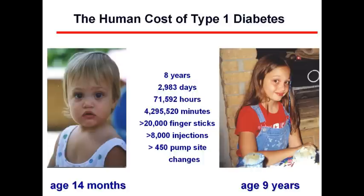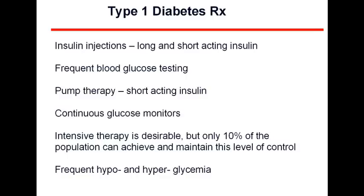The current state of the art for type 1 therapy — which is really not very artful — includes insulin injections. We are fortunate to now have long-acting and short-acting insulins far superior to what we had 20 years ago. There are pens, syringes, insulin pump therapy, and continuous monitors that give 288 tissue glucose readings over 24 hours. However, most people aren't fond of wearing those, and only about 10% of the population can maintain intensive therapy, with frequent hypo and hyperglycemia remaining a problem.